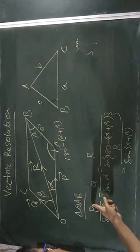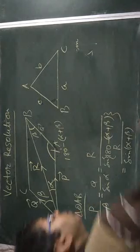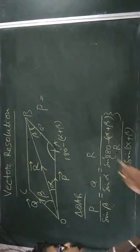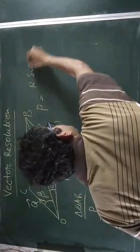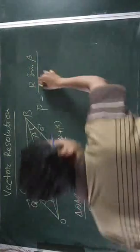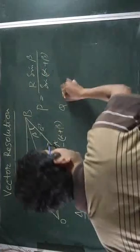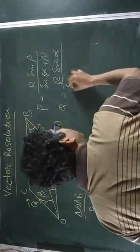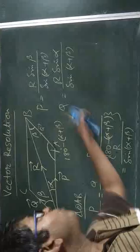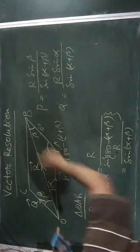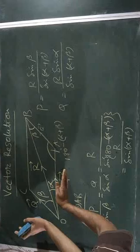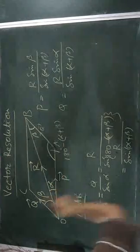From this relation, the value of p is r sine beta divided by sine(alpha plus beta), and q is equal to r sine alpha divided by sine(alpha plus beta). These are the values of the two components into which vector r breaks itself during action.